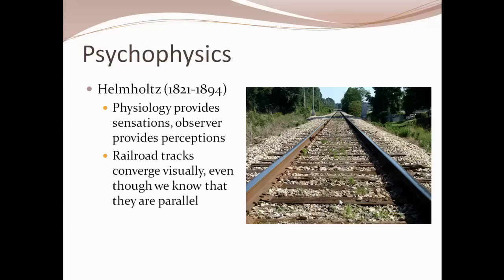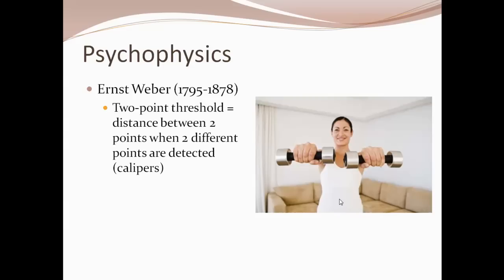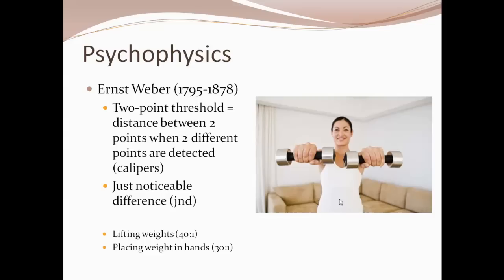Here are a couple of examples from psychophysics that tend to stick with us in introductory psychology. Ernst Weber — in German the W sounds like a V — worked in Germany from the late 1700s into the 1800s. He had this idea about a two-point threshold: the distance at which two separate points can be detected as distinct. If you hold two pencils like chopsticks and touch them to the back of your hand with your eyes closed, how far apart do they have to be before you can tell it's one point or two?